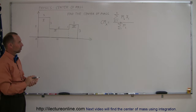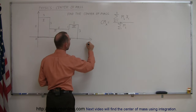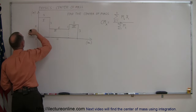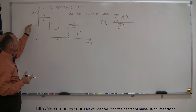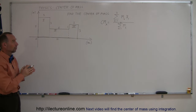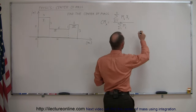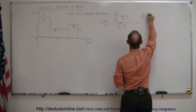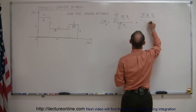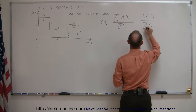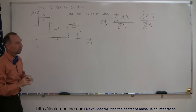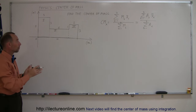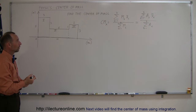Now they didn't give us the mass; they gave us the dimensions, and let's say the dimensions are in meters. So instead of using the masses, we can use the areas, because we assume these are thin plates so that the mass of each plate is proportional to its surface area. So we can find the exact same result by using the sum of all the areas times the center of mass of each area, divided by the sum of all the areas from i equals 1 to 3.